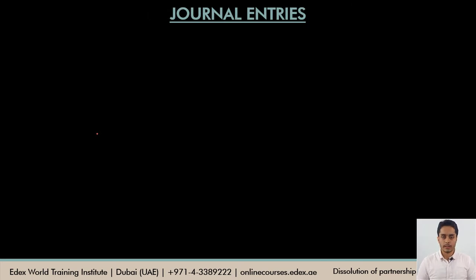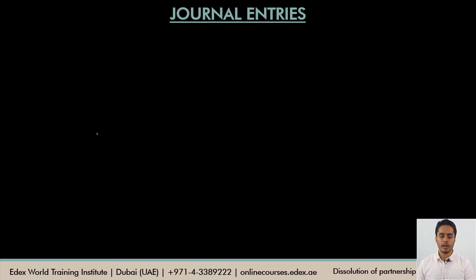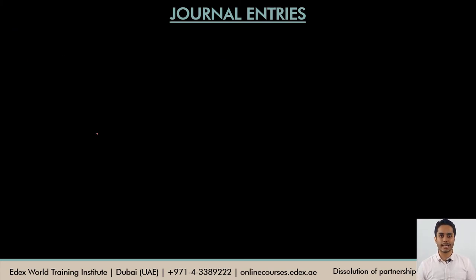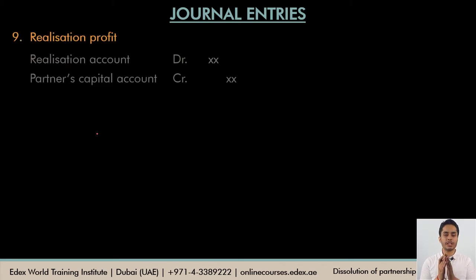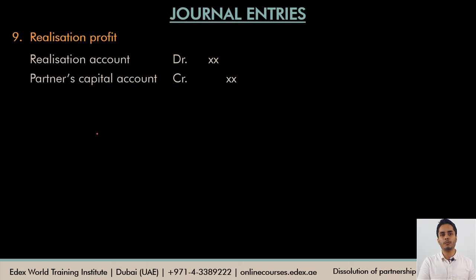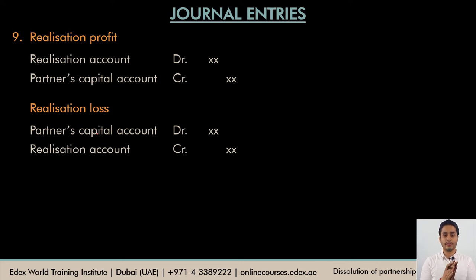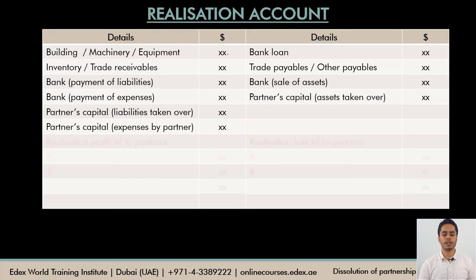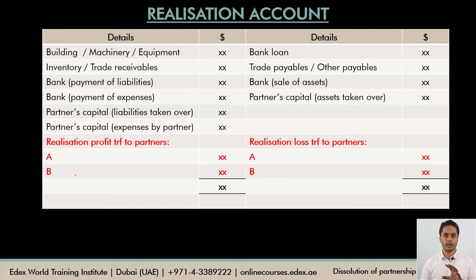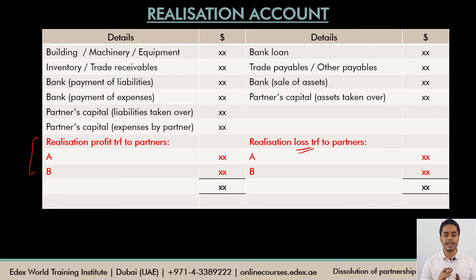Once all these entries are done, there would be some realization gain or loss. If it is a realization gain, the credit side would be higher than the debit side. To close the realization account, we debit the realization account and transfer this gain to the partner's capital account by crediting their capital accounts. If the debit side is greater than the credit side, it is a realization loss — we close the realization account by crediting it and transfer the loss to the debit side of the partner's capital account.